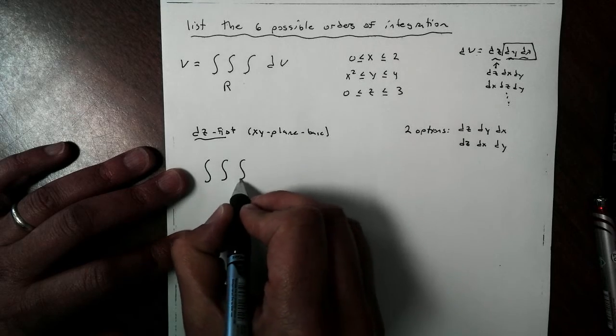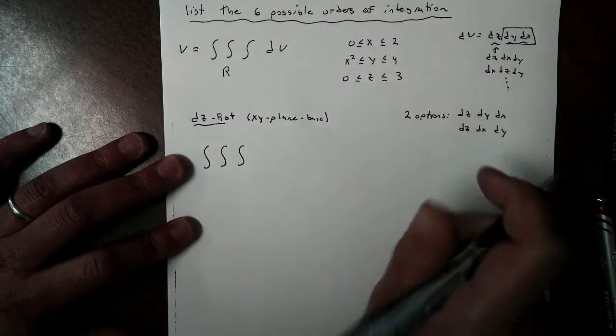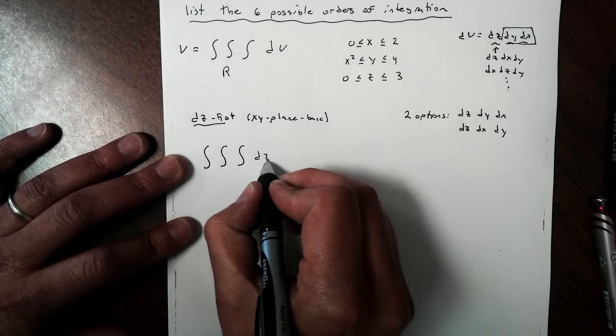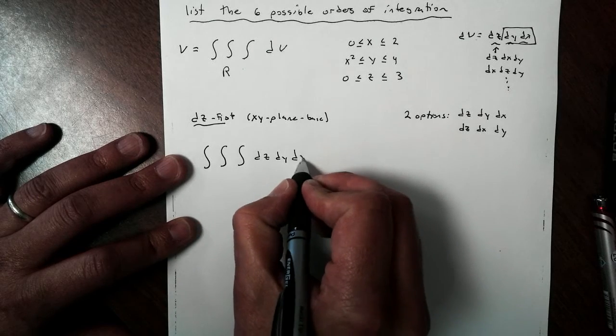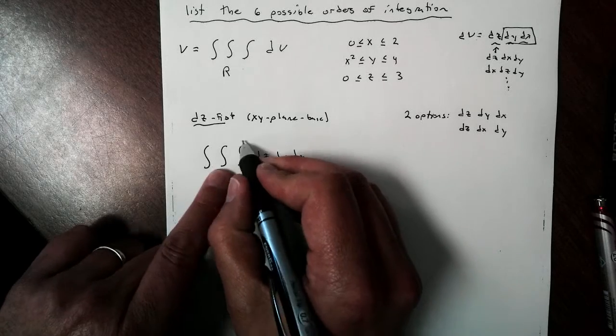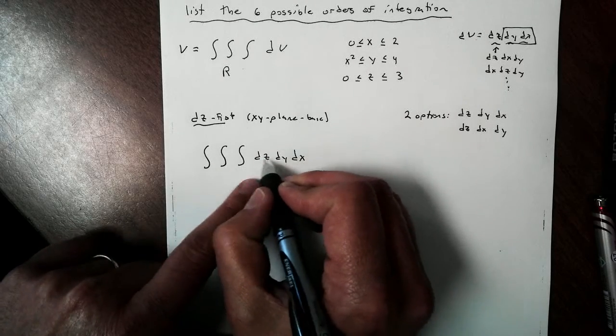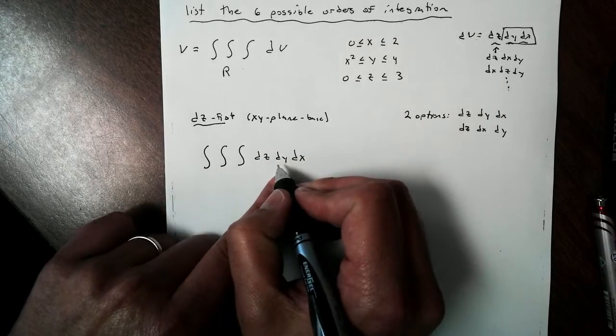I'm going to start with my triple integral. And I'm going to start with DZ, DY, DX. Now I have to talk about their limits. The change in Z, the change in Y, the change in X. In order to do this, remember, because this is my base right here.